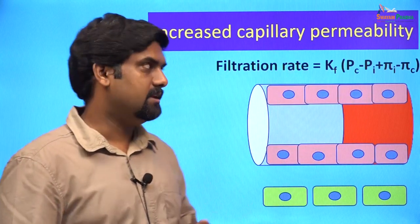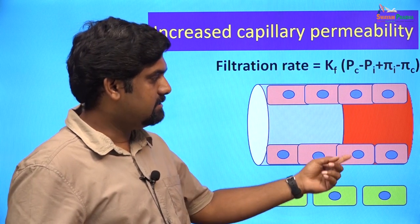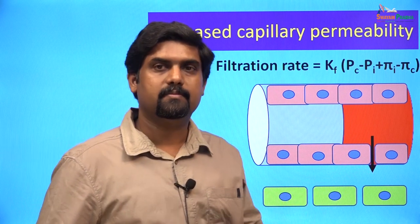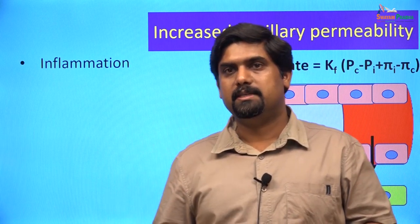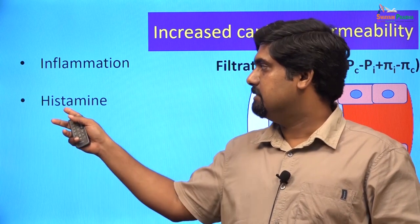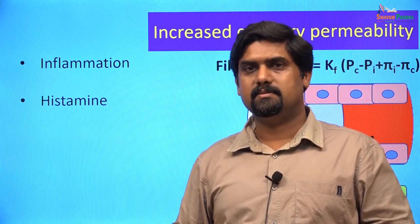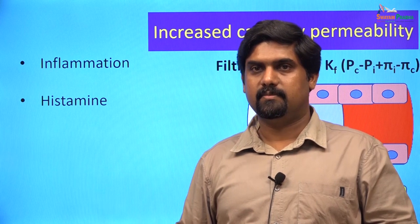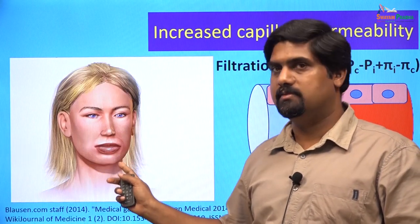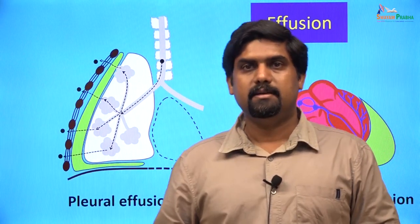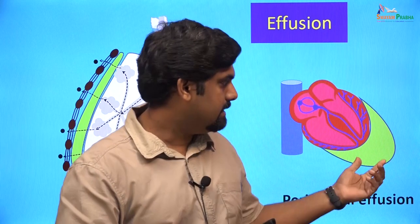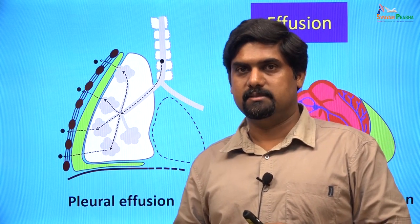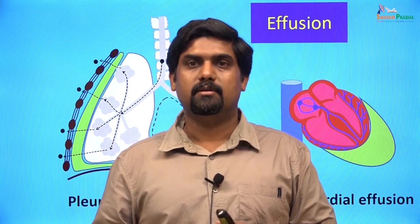One important cause for extracellular edema is increased capillary permeability. When there is increased capillary permeability, there will be excess fluid filtration happening at the capillaries, and this will lead to extracellular edema. The capillary permeability is increased by inflammatory conditions where there is release of histamine. Such localized edema can happen with insect bites or bee stings, and they usually cause swelling of the affected region. Here we can see an example of localized edema of the lips. Inflammation of the pleural space or the pericardial space can lead to exudation of fluid from the capillaries into these spaces and can lead to effusions, as seen in pericarditis or pleuritis.